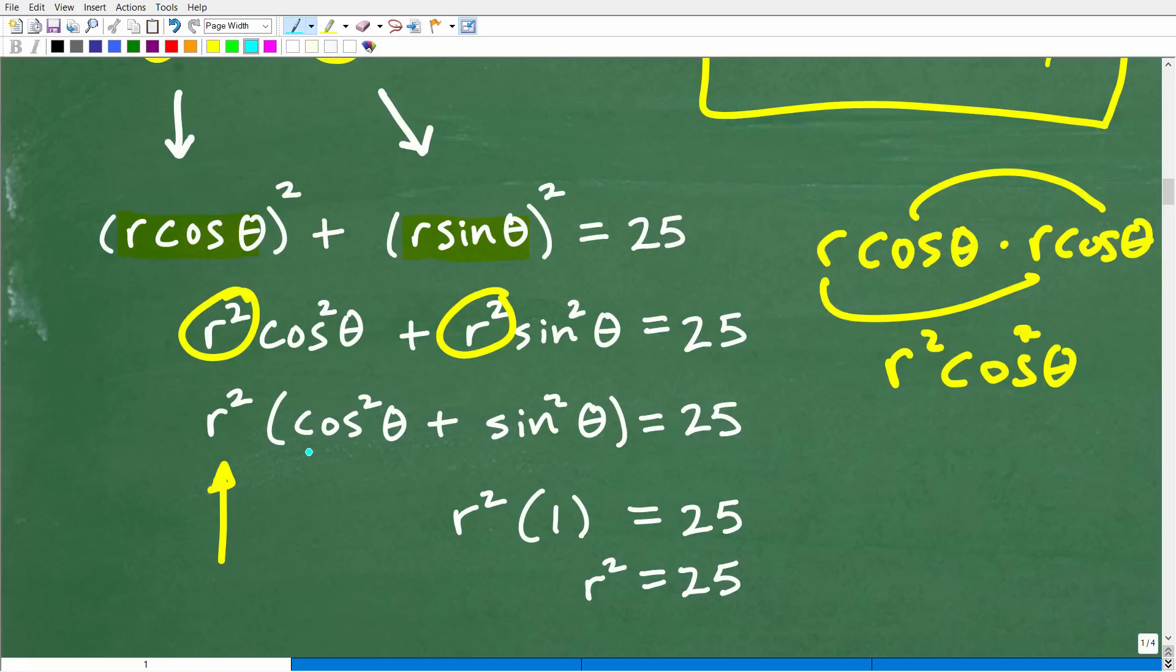We'll have r squared parentheses cosine squared theta plus sine squared theta. All this in parentheses is equal to 25. Now I know all of you are experts in trigonometric identities because cosine squared theta plus sine squared theta is equal to 1. This is a trigonometric identity that you hopefully know. It's a pretty common, matter of fact it might be one of the most common identities. So for those of you that are studying this level of math, you already have studied trigonometric identities before you get to this unit or chapter. So r squared times 1 is just r squared. So r squared is equal to 25 is our equation written in polar form.